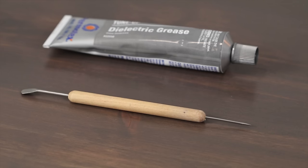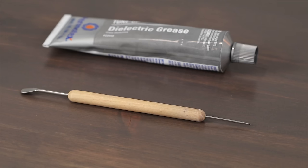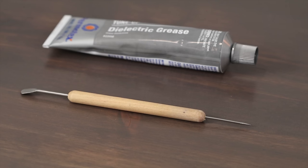You'll also need some sort of pointy object to guide a little drop of the grease onto the stabilizer. So I used a little clay tool. It's actually made for sculpting clay, but works perfect for this application. Or you could just use a needle or something like that.